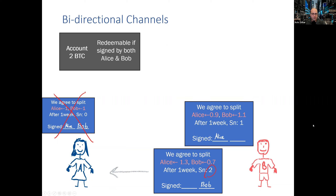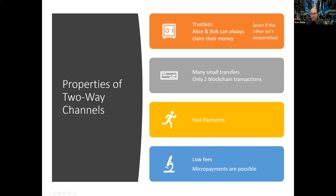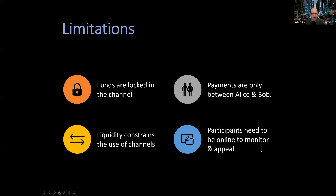What we get is a two-way channel between Alice and Bob for many small payments. The system is completely trustless: Alice and Bob can always claim their money even if the other side is uncooperative or tries to cheat. They only need two blockchain transactions per channel — one to open and one to close and settle. That's relatively cheap for an unlimited number of transfers back and forth. Payments are very fast, requiring only communication and signatures between the two parties, supporting very low fees and even micropayments — fractions of a cent.